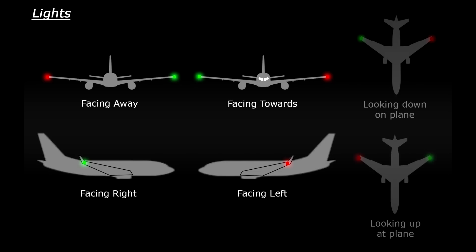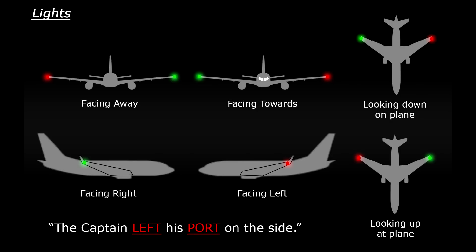There's a great little phrase to remind yourself which light sits on which side. The phrase goes: 'the captain left his port on the side.' And if you didn't already know, port is also the name given to a type of red wine. So if you can remember that phrase, you'll always know that red is on the left and green is on the right.